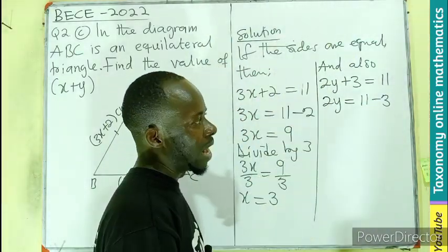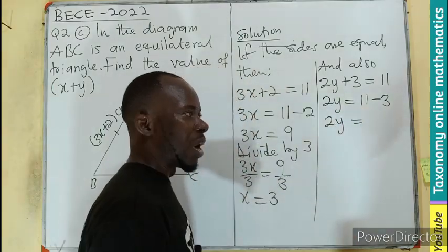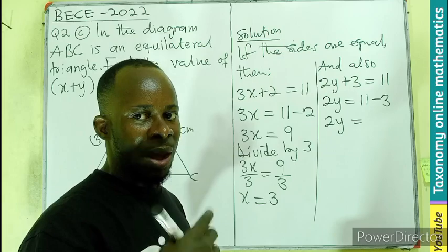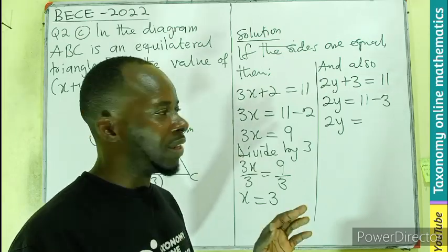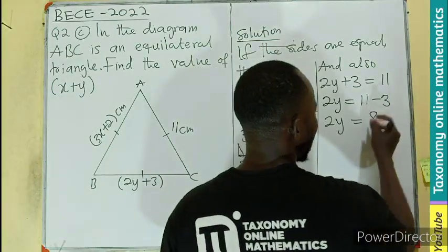When the 3 is being transferred, it becomes negative. So you have your 2Y equals to, you are having 11, you take away 1, you are left with 10. Take away 1, 9. Another 1, 8. Meaning this minus 3 will give us 8.